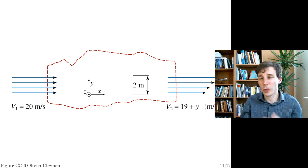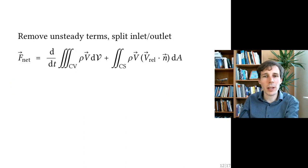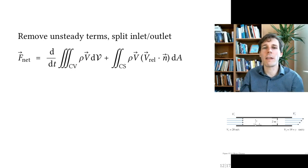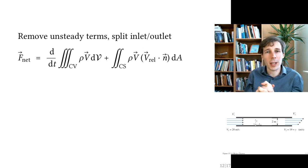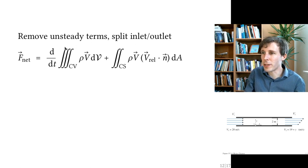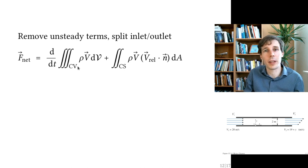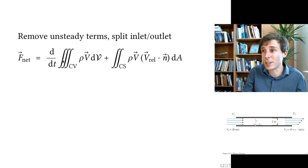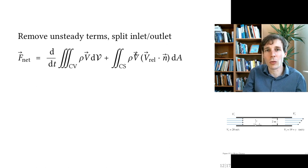Based on this, how do we compute the net force on the flow? We write the general momentum equation. The first term — the change in time of momentum inside the control volume — will be zero here, because even though the total momentum inside the control volume is not zero, it doesn't change with time, so d/dt equals zero.